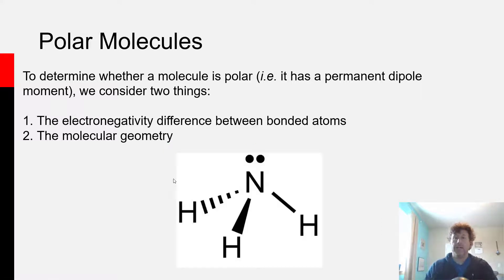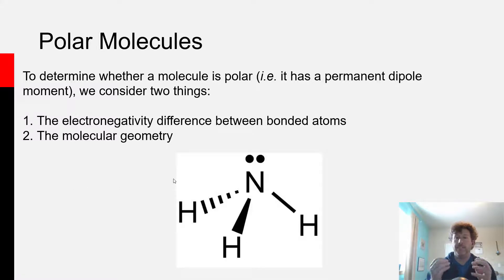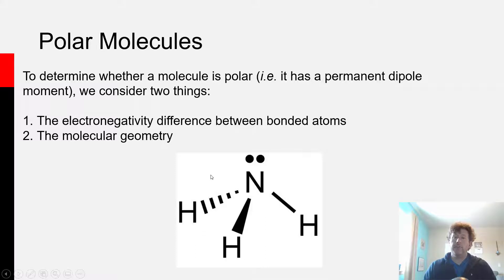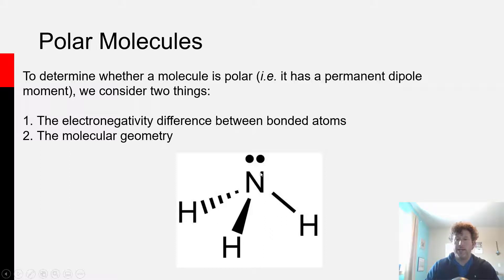But if we have a molecule like ammonia, where we have multiple bonds, now we have to look at the electronegativity difference across each bond, and we have to look at how the bond dipoles fit together and what that means for the whole molecule. Ammonia is a trigonal pyramidal molecule — shaped kind of like an inverted umbrella, where the hydrogens are the turned-out ends of the umbrella, or like a tripod where the hydrogens are the feet and the nitrogen is the top.